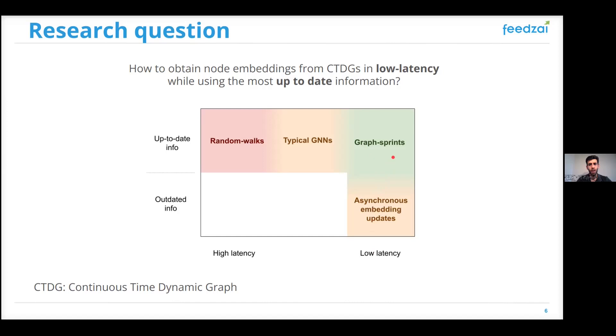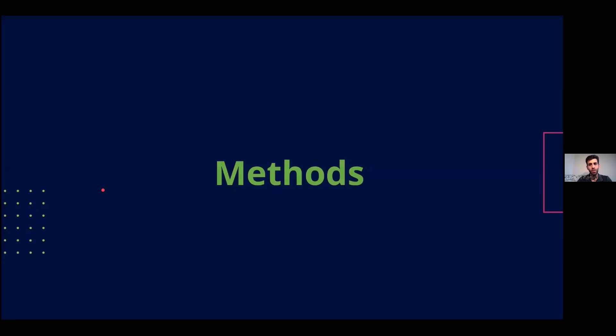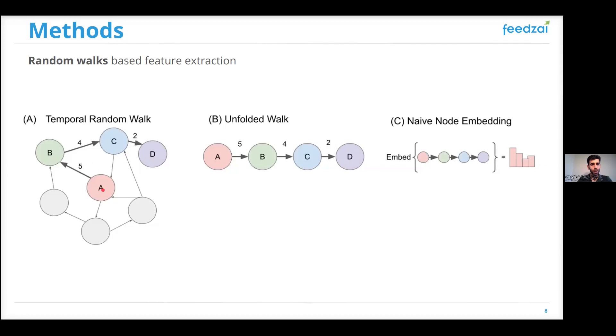Going into the details of our method and starting by the intuition. The intuition behind Graph Sprints is from the RandomWalk-based feature extraction methods, where given a dynamic graph growing over time where every edge has a timestamp associated, in order to obtain a node embedding for node A after the arrival of this edge A to B at timestamp 5, a set of RandomWalks will be launched starting from A.